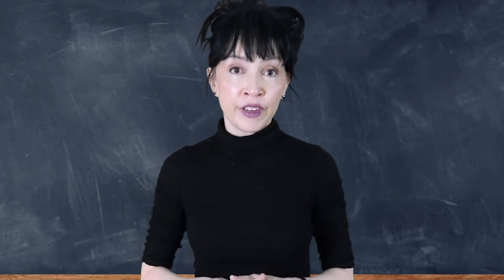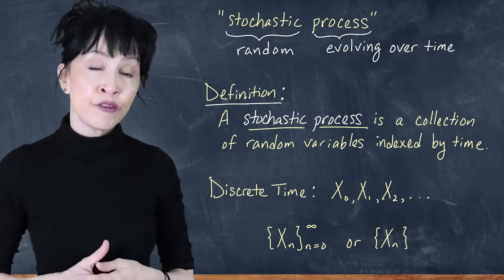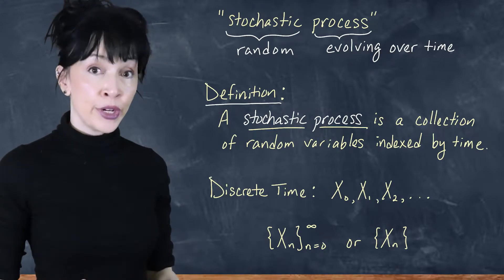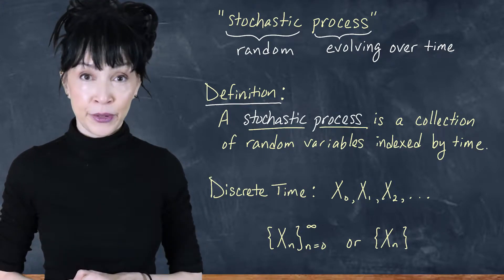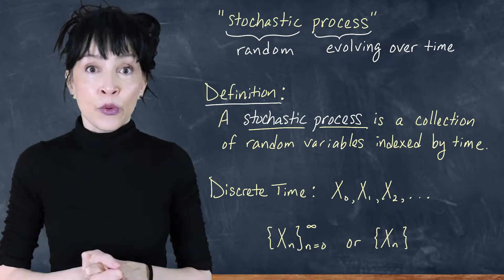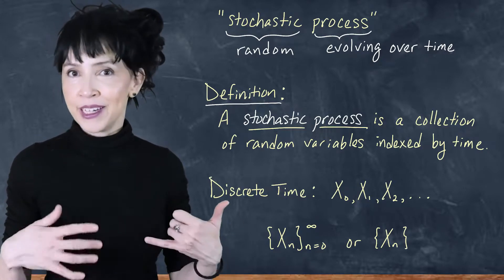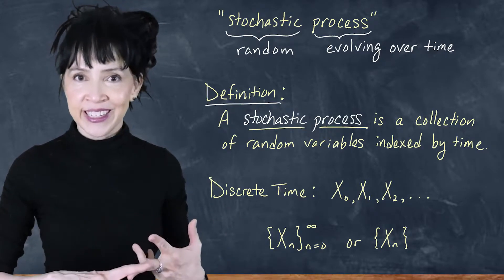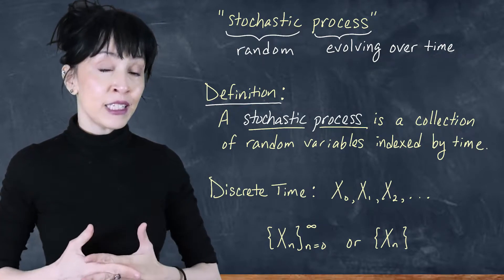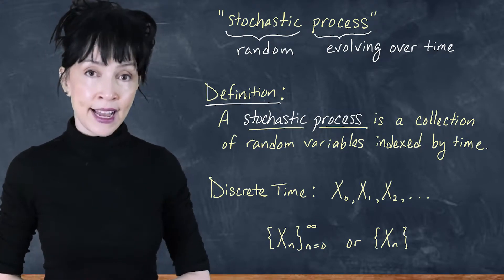You may recall from our intro video — video one — we defined a stochastic process as a collection of random variables indexed by time. Those random variables can be discrete or continuous, and time can be discrete or continuous. If we're indexing by discrete time, we're probably going to use integer values, even though you can have other discrete sets like 1.1, 1.2, etc. — discrete and separated on a number line. But for us, it's probably going to be time 1, time 2, time 3, and even a starting value at time 0.